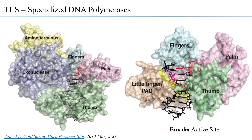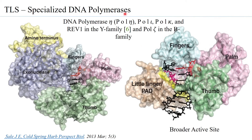In the normal replicating polymerase the bulky adduct may not even be properly held, so synthesis stalls. In the specialized polymerase it is able to accommodate the bulky adduct and add nucleotides to move forward. Of the specialized DNA polymerases you have pol eta, pol iota, pol kappa — all belonging to the Y family — and pol zeta, which belongs to the B family but has been found to have a role in translesion synthesis.